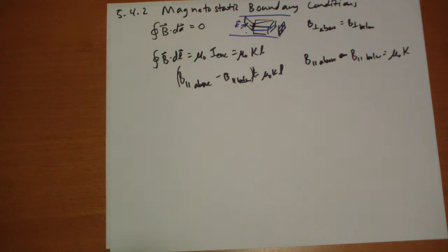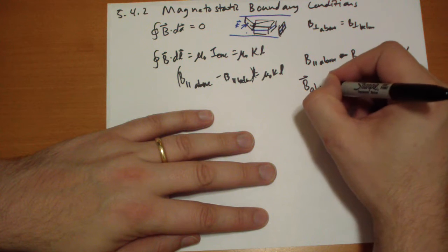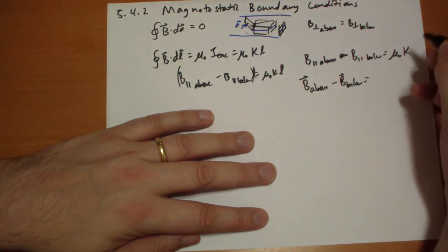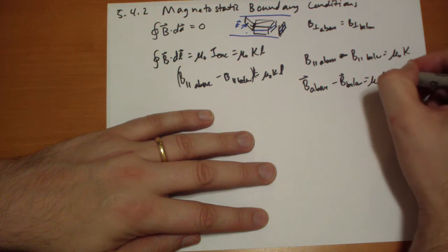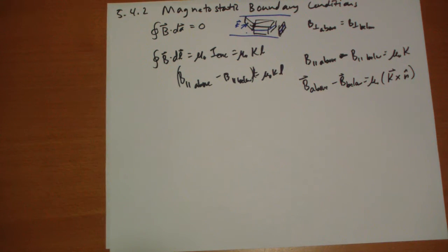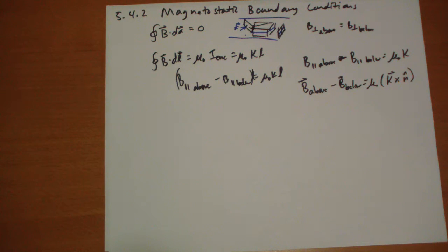What about A vector? How does that behave? The vector potential. Oh, we can actually do this. Let's put these all together. B above minus B below is equal to mu-naught K vector cross the normal. That's a single formula that is really cool because it summarizes these two into one simple formula.